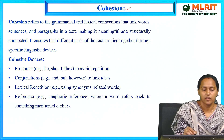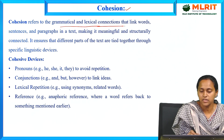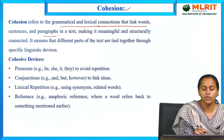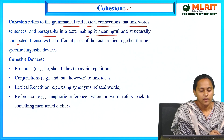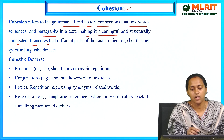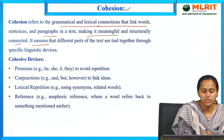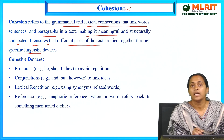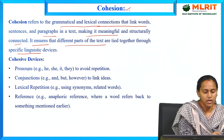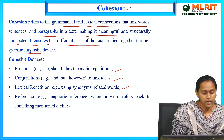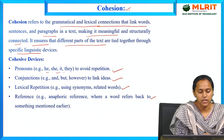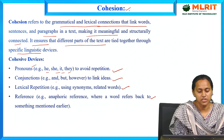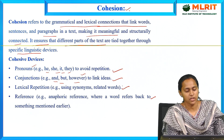Cohesion means the grammatical and lexical connections that link words, sentences, and paragraphs in a text, making it meaningful and structurally connected — the previous sentence and next sentence are connected to each other. It ensures that different parts of the text are tied together using specific linguistic devices. The cohesion devices are pronouns, conjunctions, lexical repetition, and references. Examples of pronouns: he, she, it, they. Conjunctions: and, but, however. Lexical repetition uses synonyms, and anaphoric references where a word refers back to something mentioned earlier.